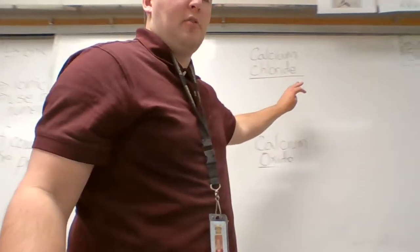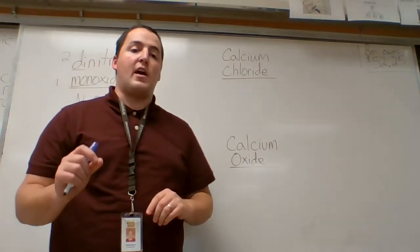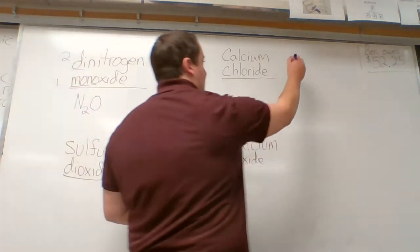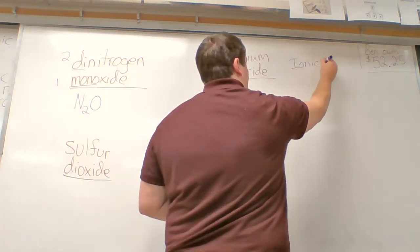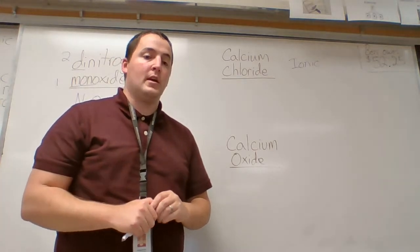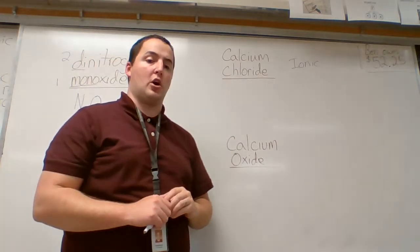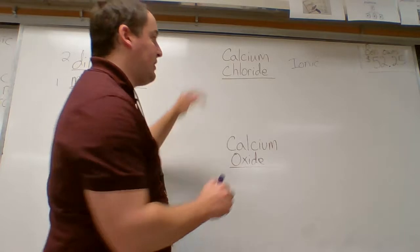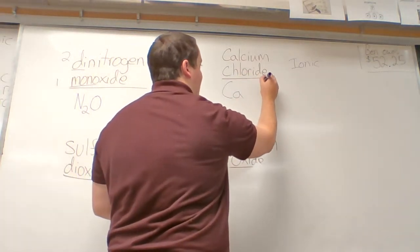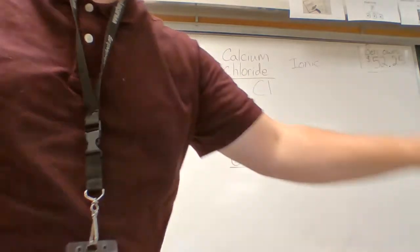Let's come over to this example — calcium chloride. As you read that name, calcium chloride, you will notice that there are no prefixes. Since there are no prefixes, we know that this is ionic, because only covalent compounds have prefixes. When you are creating the formula for an ionic compound, you need to know the charges. So we know calcium is Ca, and we know chloride is Cl. We have those two elements, but we need to know the charges of those two.